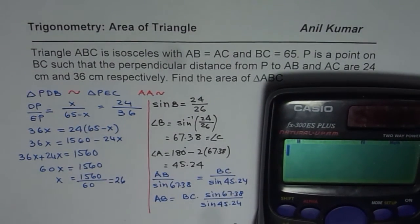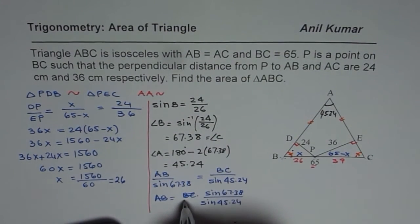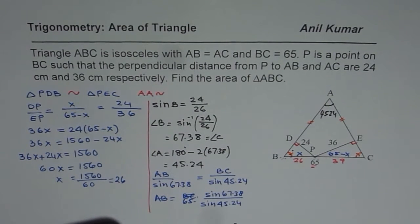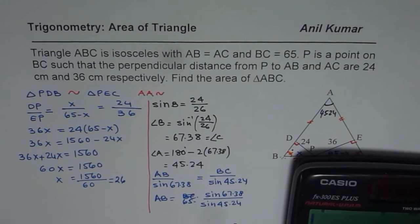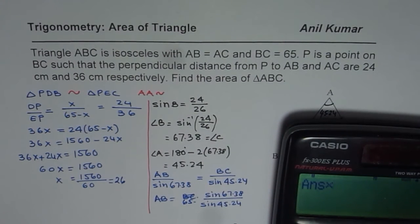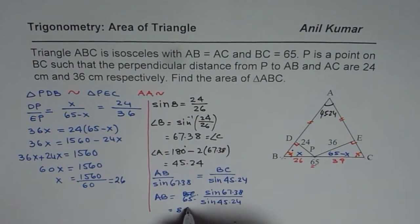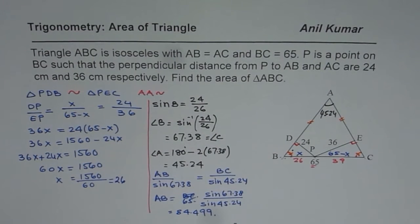Let's calculate this. BC is 65, so AB equals 65 times sine of 67.38 divided by sine of 45.24, which equals approximately 84.499. So we get AB as 84.499.